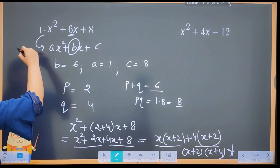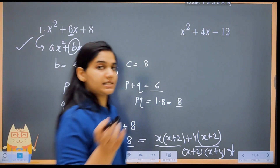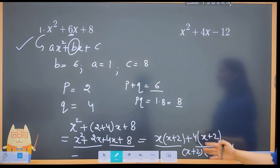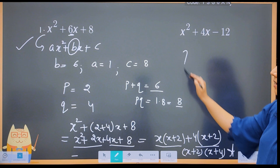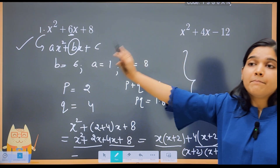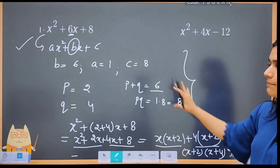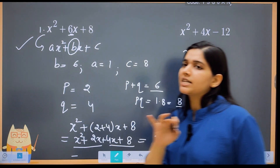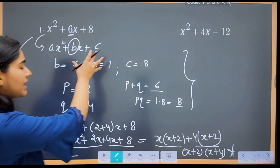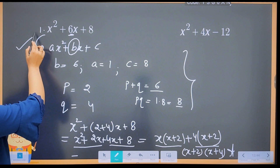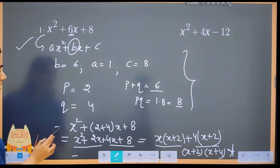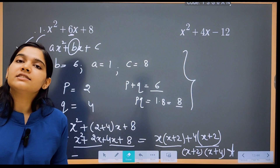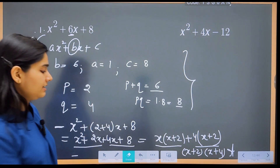This seems lengthy here because we mentioned a, b, c, p, q explicitly. When you practice more, it won't be necessary to mention all these steps in the exam — you can directly write from the grouping step onward.